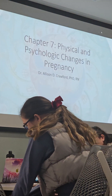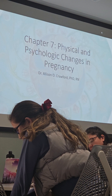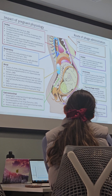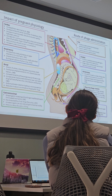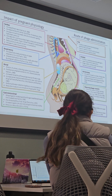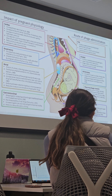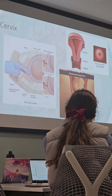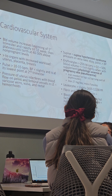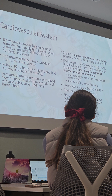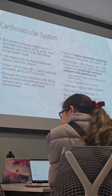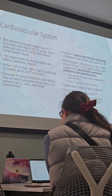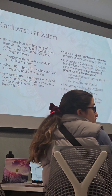Chapter seven covers physical and psychological changes. Know all the normal physiological changes of pregnancy — if you know the normals, you know the abnormals. Know all the slides on the cardiovascular system and normal physiologic changes. Know how to teach somebody to prevent supine hypotension and physiologic anemia.